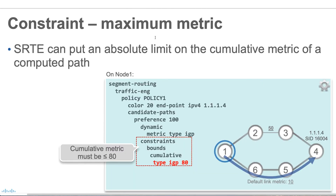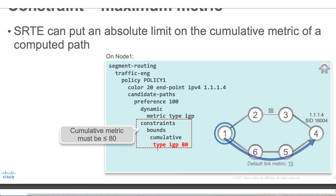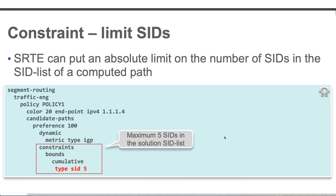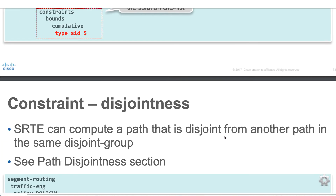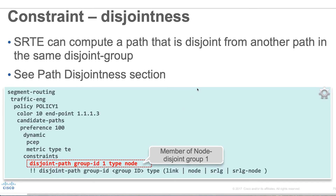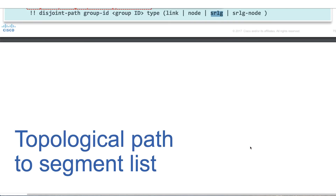We can also give a constraint of maximum metric — for example, saying the metric needs to be less than or equal to 80. We can also use a bound type constraint to set a maximum of 5 SIDs in the solution. For disjoint path, the disjointness can be based on link, node, SRLG, or SRLG-node. The earlier example was based on node. You can exclude either the link, SRLG risk group links, or any particular node.